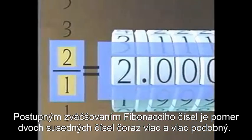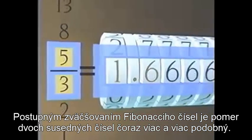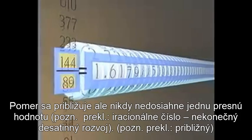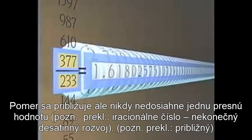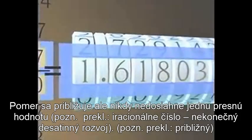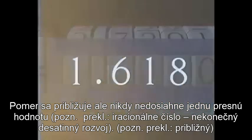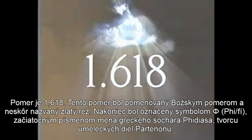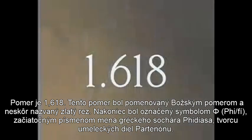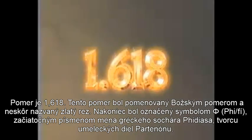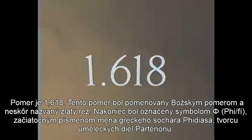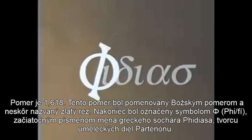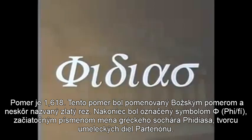As Fibonacci numbers increase, the proportion of two successive numbers becomes more and more similar. The ratio approaches but never reaches an infinite decimal beginning with the numbers 1.618. This ratio was given the name the Divine Proportion and was later called the Golden Mean. Eventually, it was given the abbreviation Phi after the initial of the Greek sculptor Phidias, creator of the artwork on the Parthenon.